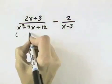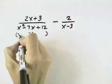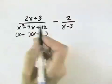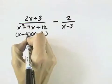Well, first we need a common denominator, but in order to do that, we need to know what factors we have in this denominator. And what we'll end up with is x minus 4 times x minus 3 when we factor it.